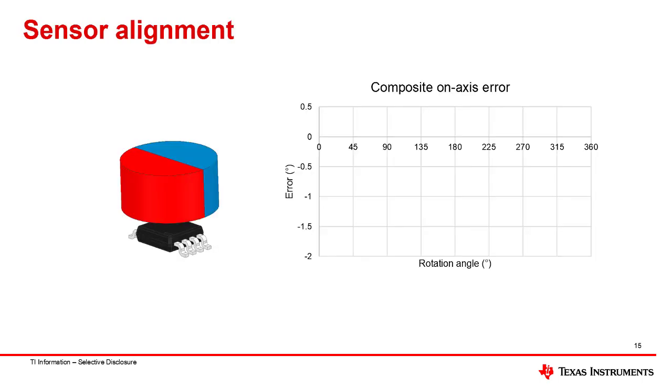In addition to the possibility of the magnet exhibiting some tilt and offset, the sensor can similarly be misaligned. Tolerances in manufacturing, soldering, or product assembly could result in small rotation errors or offsets from the ideal alignment.